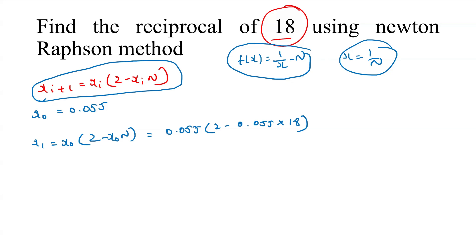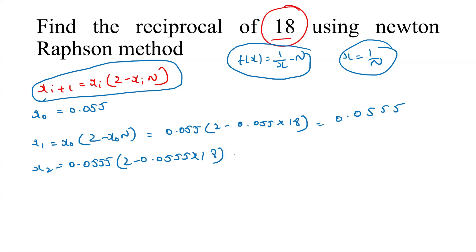So x_1 = 0.0555. Next, x_2 = 0.0555 * (2 - 0.0555 * 18) = 0.0555. Both x_1 and x_2 are equal, so the iterations have converged.